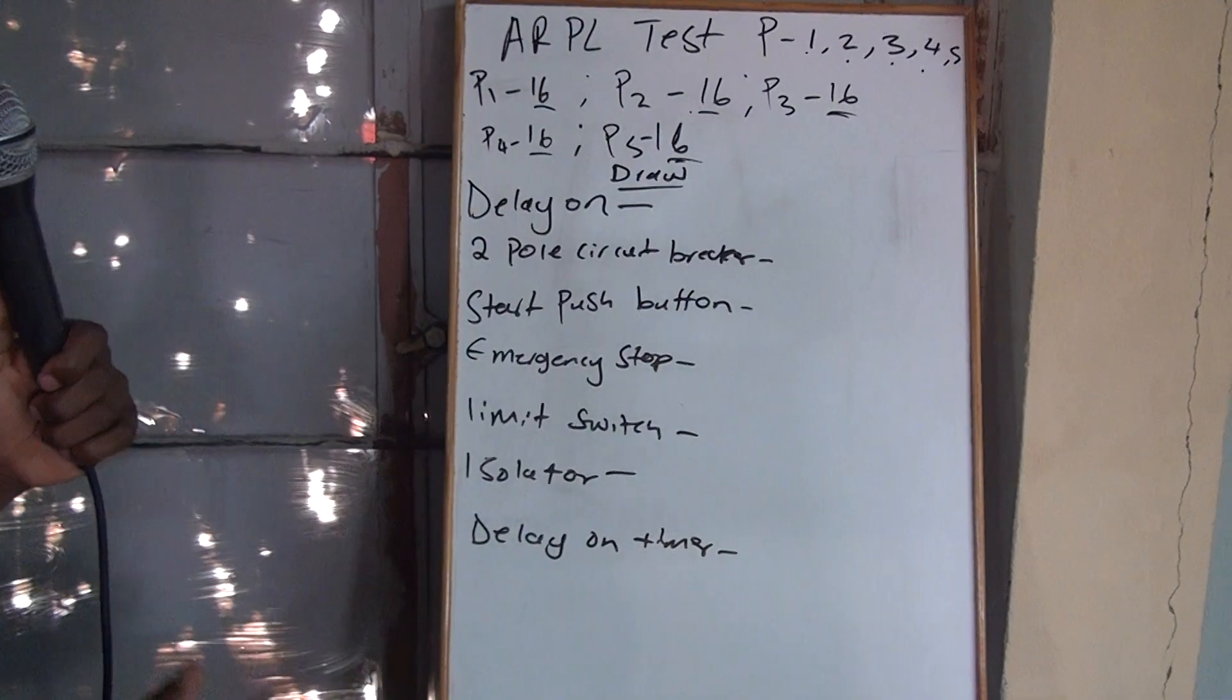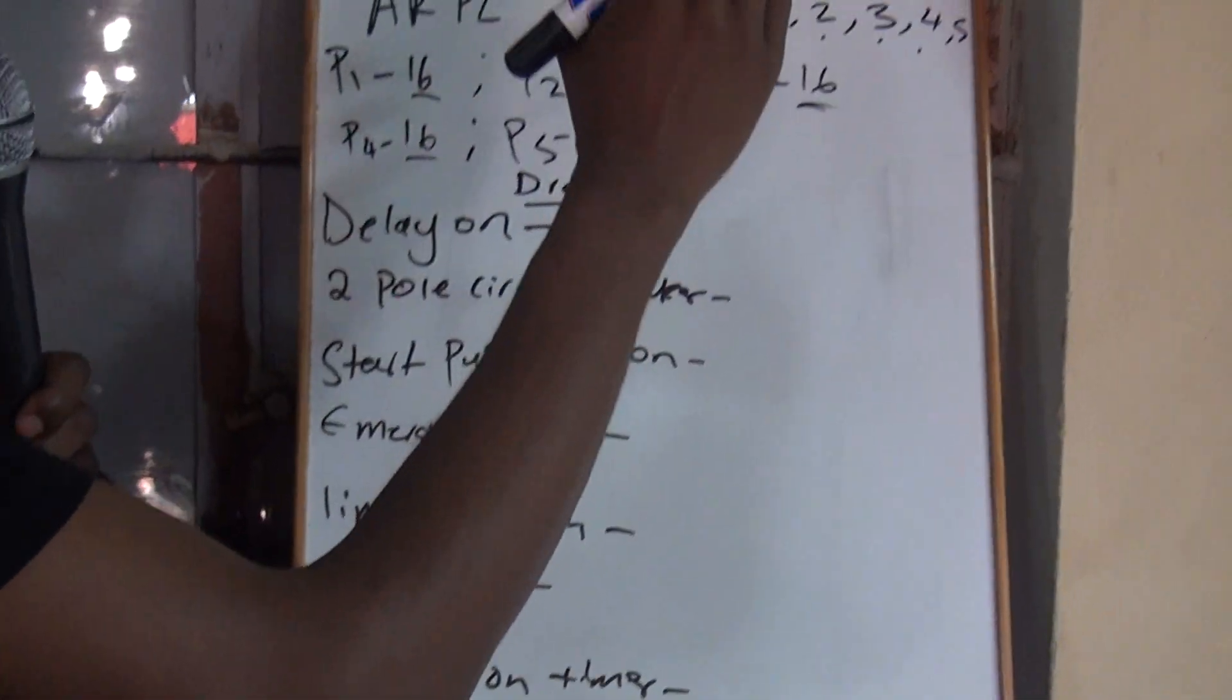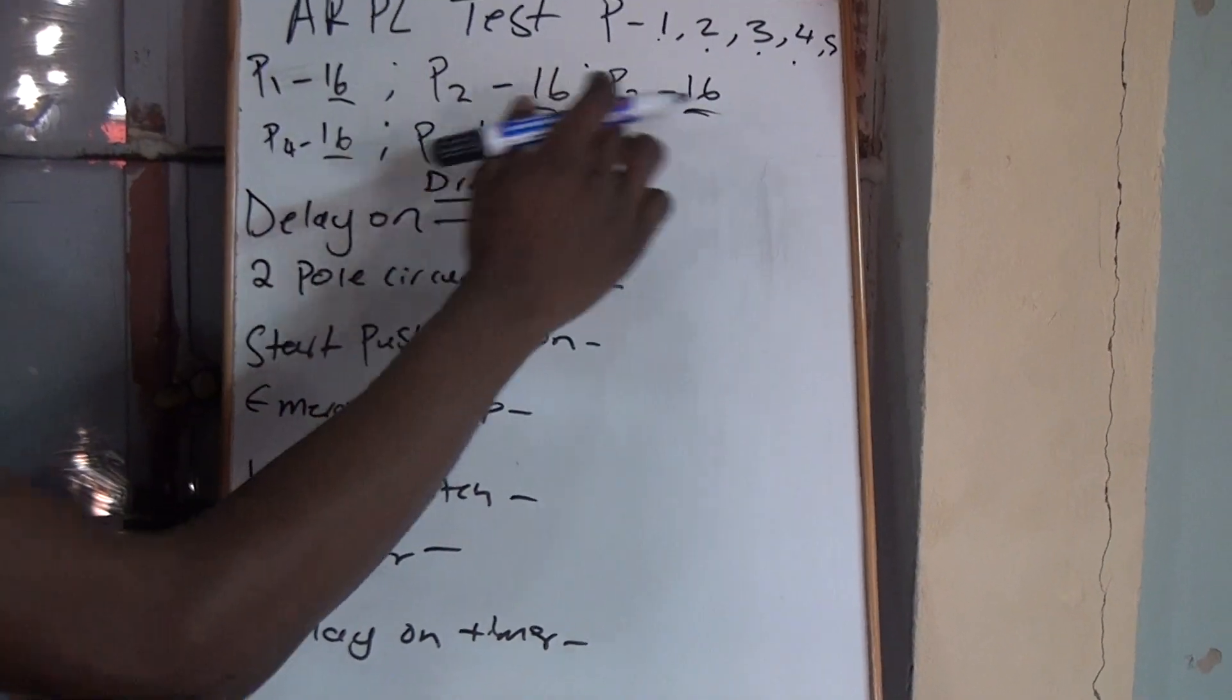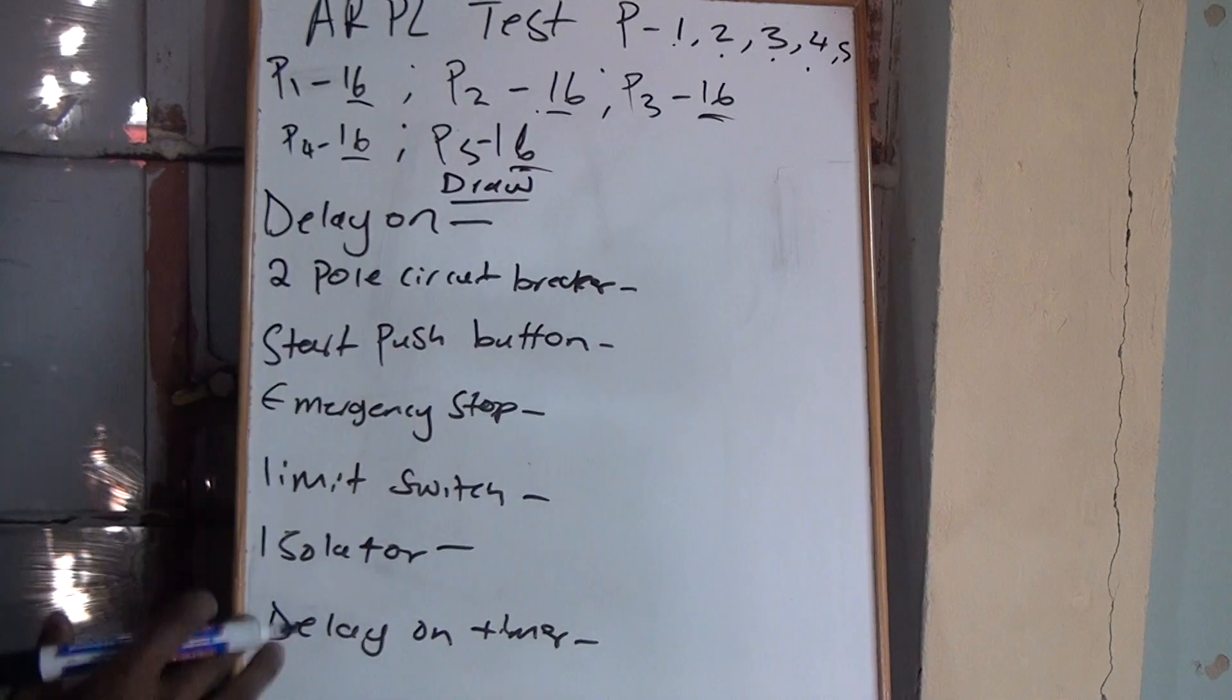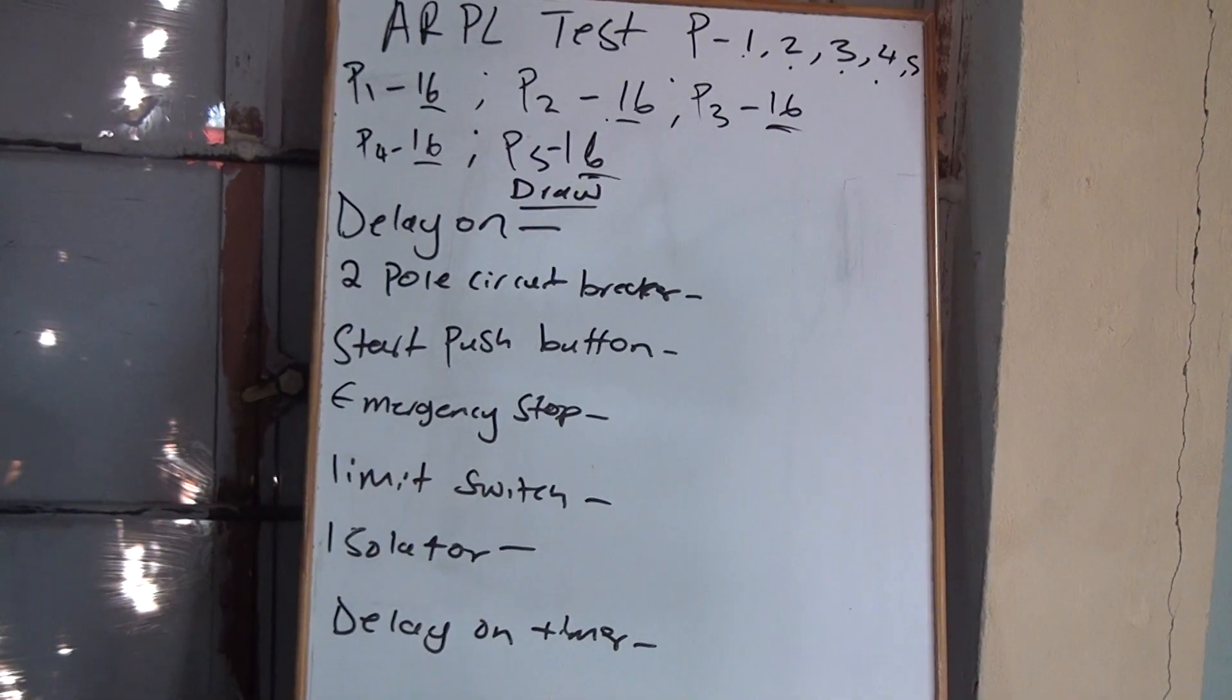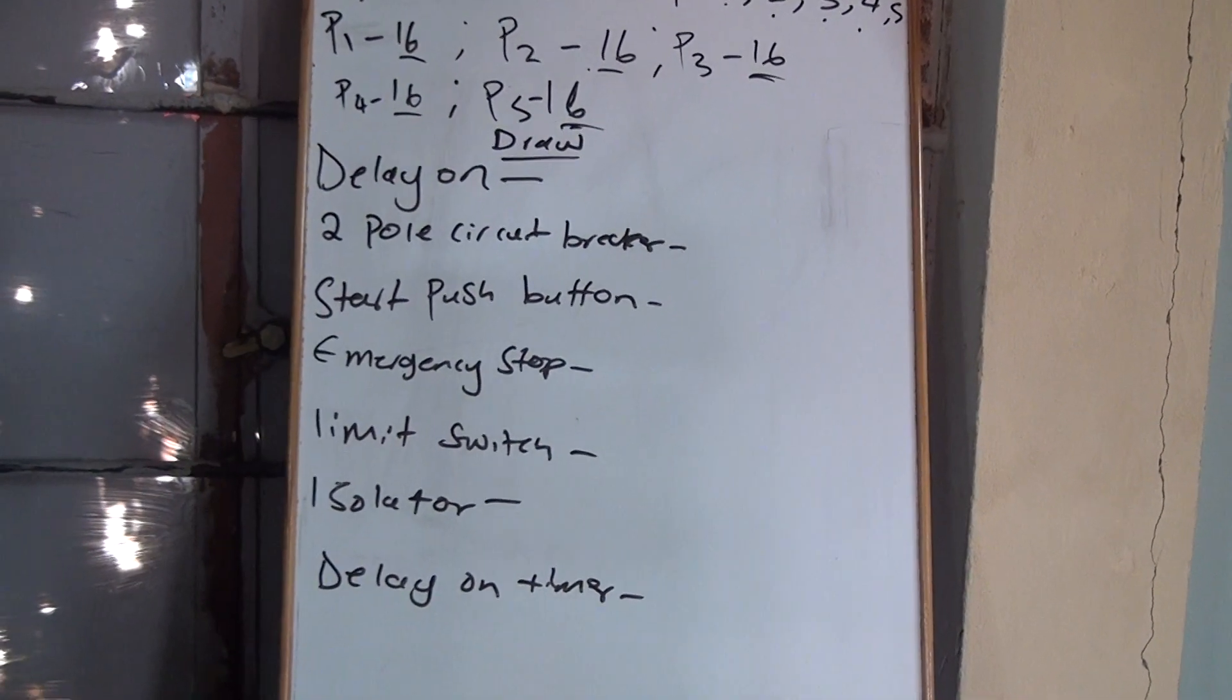They will say draw the symbols. Always your ARPL, it doesn't matter whether it's paper 1, paper 2, paper 3, paper 4, or paper 5. Your question number 16, it's always the same. They ask you to draw this. I'm going to show you how to draw them so that you can be able to pass.